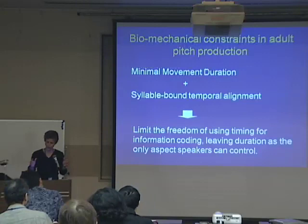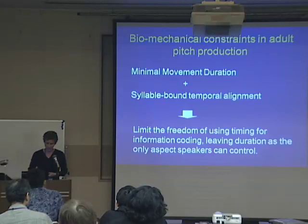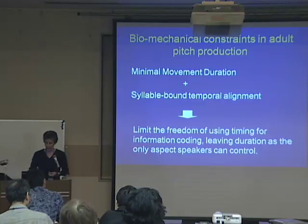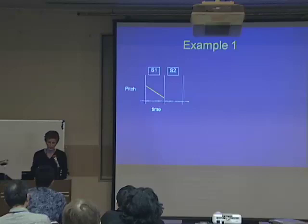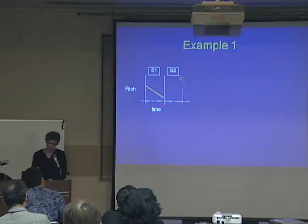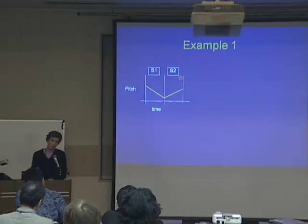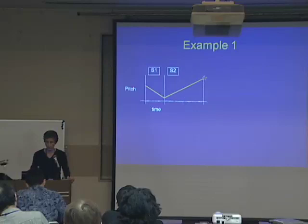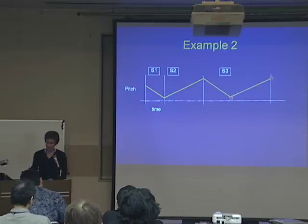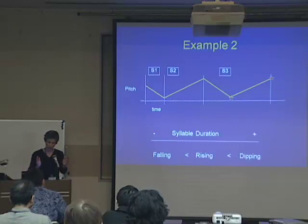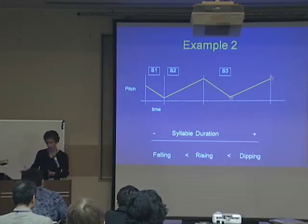What we have is a minimal movement duration that limits the freedom of using time for tonal information. Duration is the only aspect that speakers can control. Imagine we have two syllables and a falling pitch in syllable one, but we want a rising pitch in syllable two. If both syllables have the same time, we can only rise so far. If we want to reach the target, the only thing we can do is increase the length of the syllable. If each syllable has two tonal targets, we have to increase it even more. So: falling tones can be done in shorter syllables, rising tones need longer syllables, and dipping tones need even longer syllables.